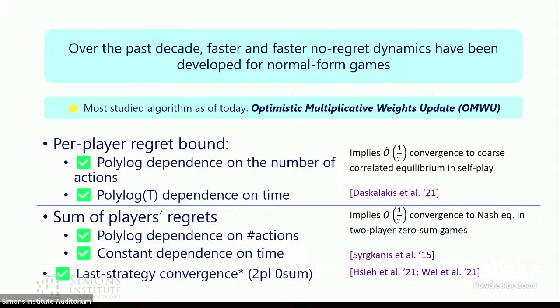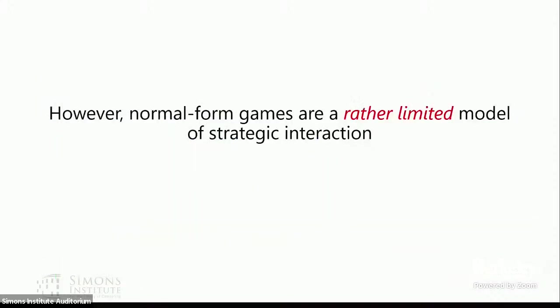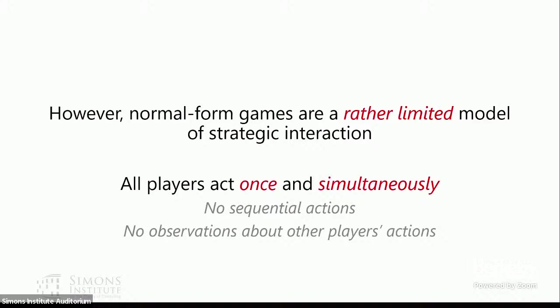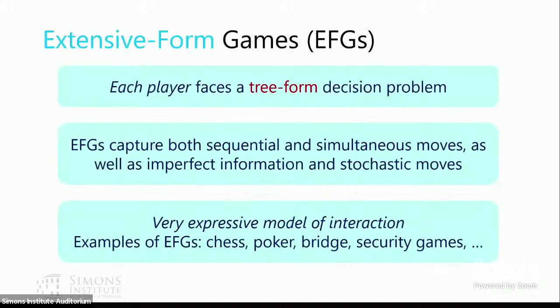For normal form games, we have a really good answer as to what it means to learn effectively. However, normal form games are a rather limited model of strategic interaction — they require all players to act once and simultaneously, and therefore have no support for modeling sequential actions or observations about other players' actions.